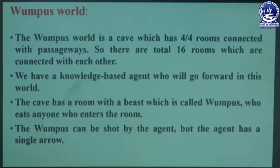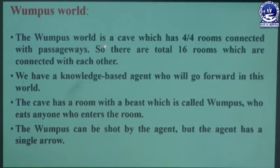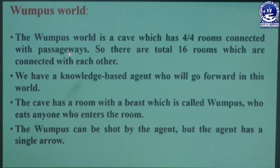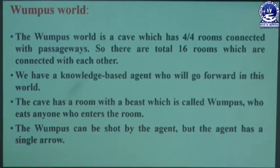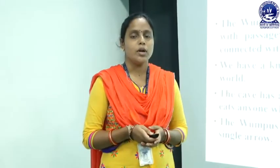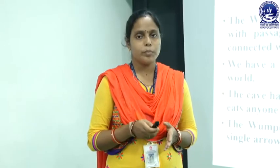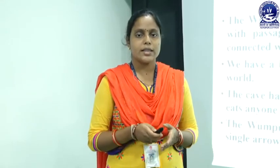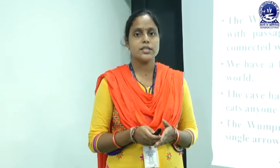Wumpus World is a simple world which illustrates the worth of knowledge base and knowledge representation. Here, the Wumpus World is a cave which has 4 by 4 rooms connected with passways. So, there are total 16 rooms which are connected with each other, represented by a 4 cross 4 matrix containing 16 number of locations or rooms.